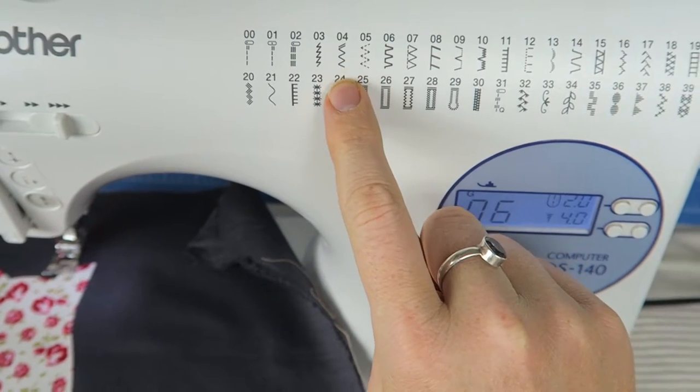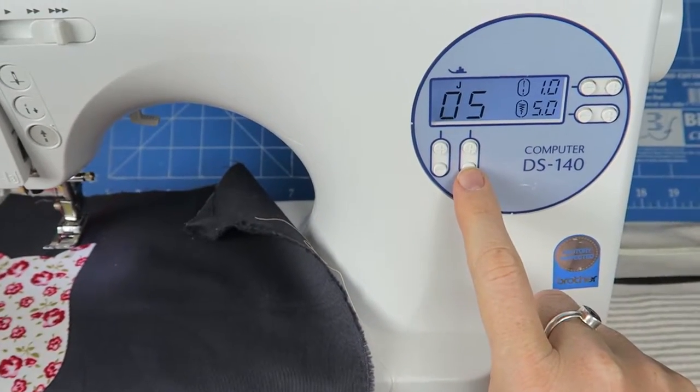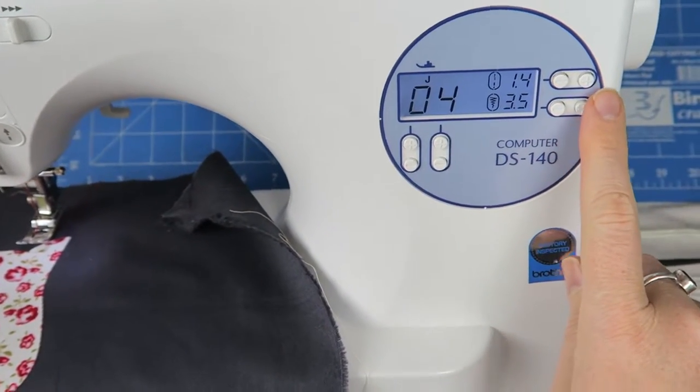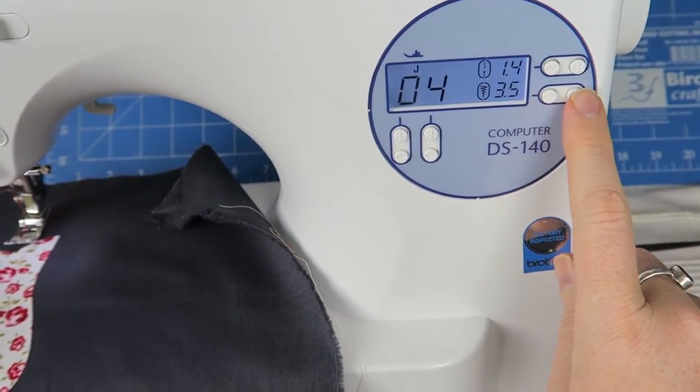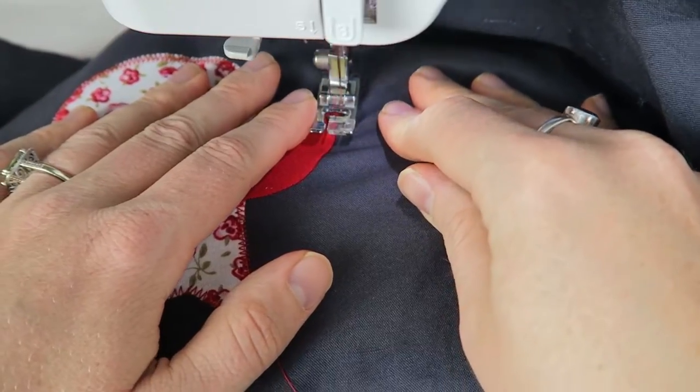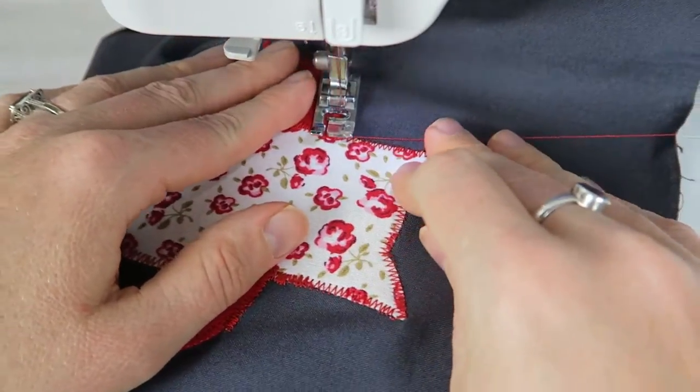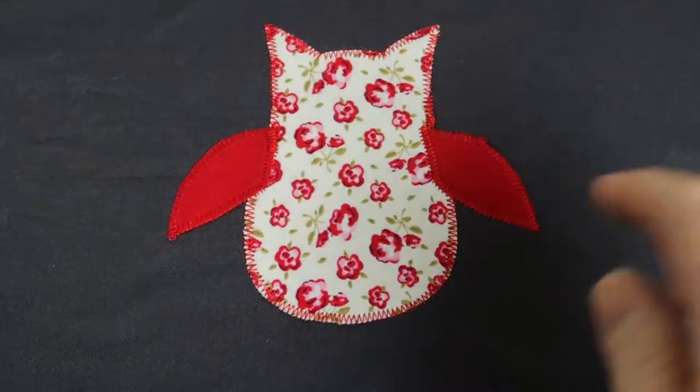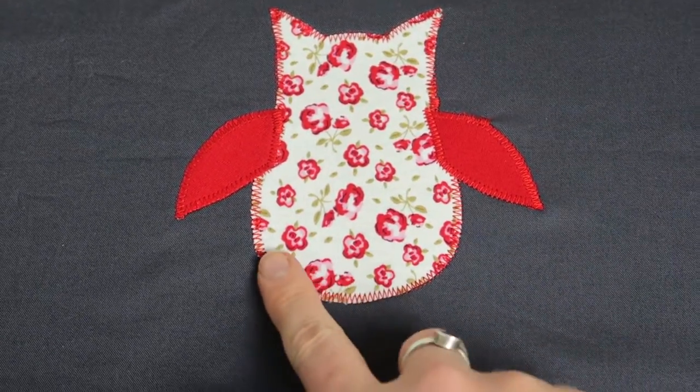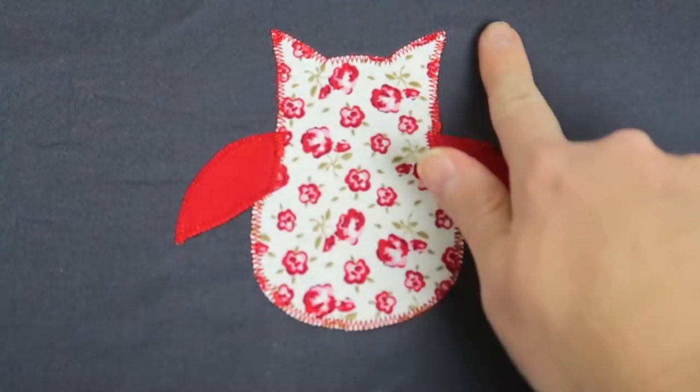Next we're going to have a look at the zigzag stitch, which is really good for overcasting and for attaching applique. So I'm going to attach an applique here with this zigzag stitch, and you can adjust the stitch length and the stitch width accordingly to get exactly the look that you want. Doesn't that look lovely?